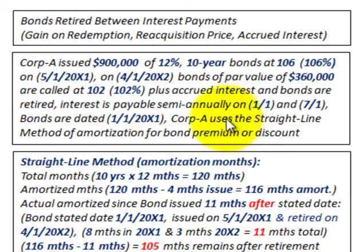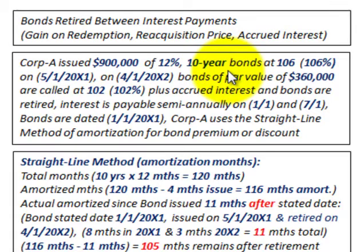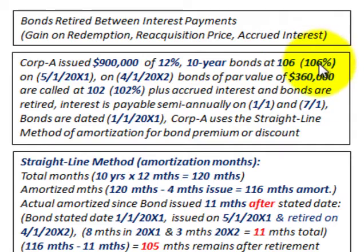Corporation A uses the straight-line method for amortizing any bond premium or discount. Two things are coming into play here: the issue amount at 106% and the call amount at 102%. The bonds were issued and had to be paid back at 106% of the bond value, but now they're being called and they're going to only have to pay 102% of the bond value being called.